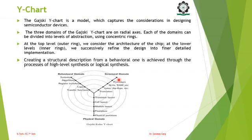In the structural domain, the topmost level is processors, then ALU and RAM, then gates, and then transistors. In the behavioral domain, the topmost level is systems, then algorithm, register transfer, logic, and the lowest level is the transfer function. In the physical domain, the topmost level is physical partition, then floor plan, module layout, cell layout, and the lowest level is the transistor. In both the structural and physical domains, the lowest level is transistors.